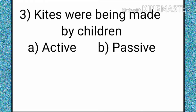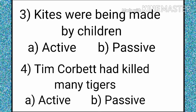Third question: kites were being made by children. Fourth one: Tim Corbett had killed many tigers.